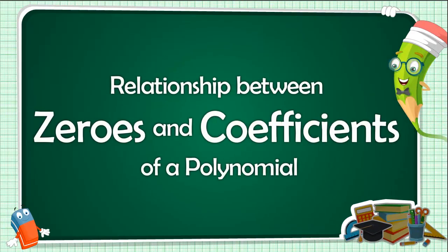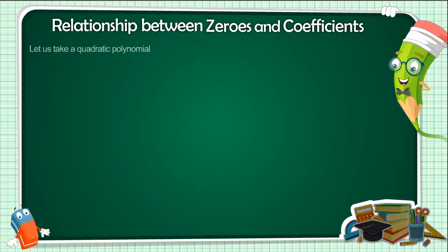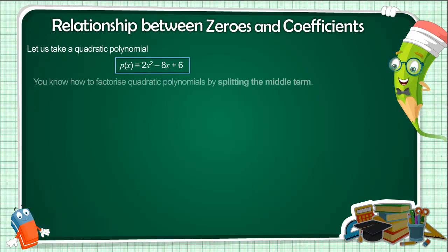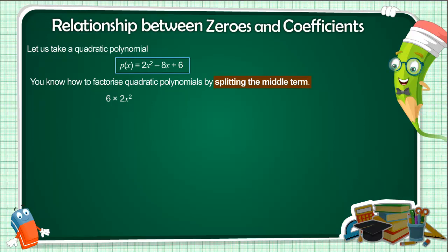Relationship between zeros and coefficients of a polynomial. Let us take a quadratic polynomial px equals 2x² minus 8x plus 6. You know how to factorize quadratic polynomials by splitting the middle term. Here we need to split the middle term minus 8x as a sum of two terms whose product is 6 into 2x² equals 12x².